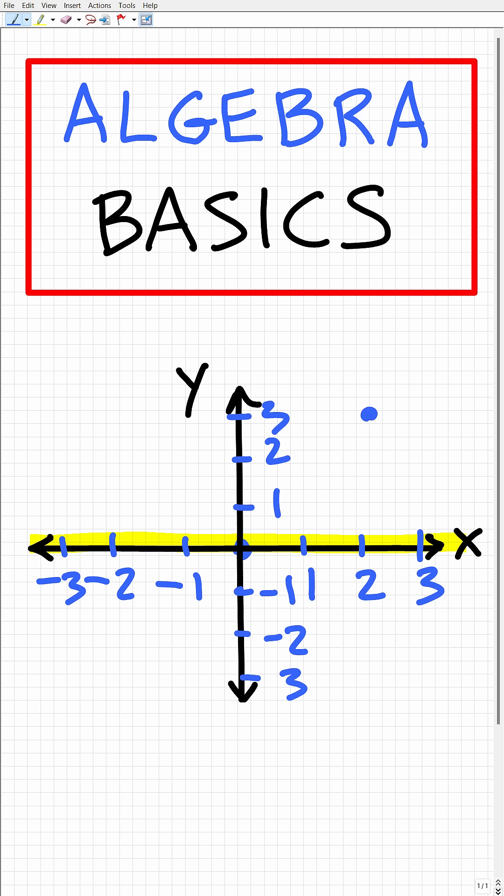Let's take a look at a simple example and talk about how to locate this point on the x-y coordinate plane. The way this works is using something called an ordered pair.